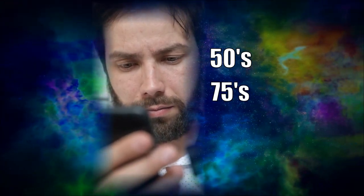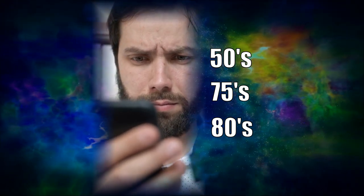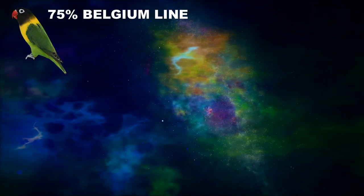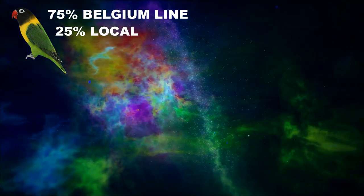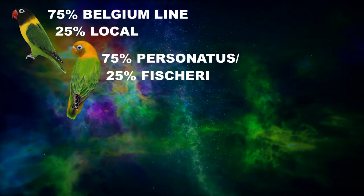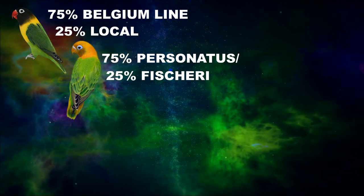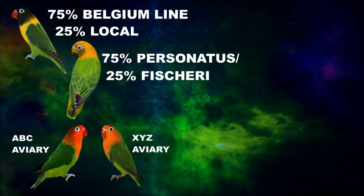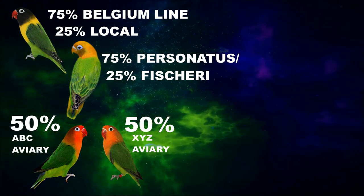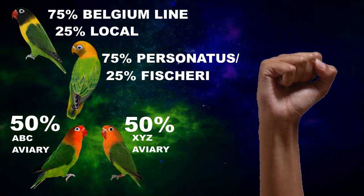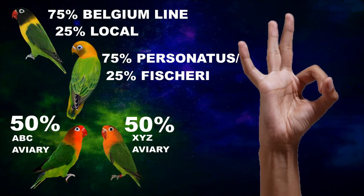It is better just to write the percentage rather than using F generations. Some posts use percentage, but many beginners are confused with these — you may see 50s, 75s, 80s, etc. We must add details after this. For example, 75% Belgium line means the bird has 75% genes from a bird from Belgium and 25% from a local bird. In a transmutant, you can write 75% personatus, 25% fisheri. Or if you bred two lines from top breeders, instead of using F1, just use 50% ABC line, 50% XYZ line. By doing this, anyone can easily understand each other and can lessen questions and misunderstanding.